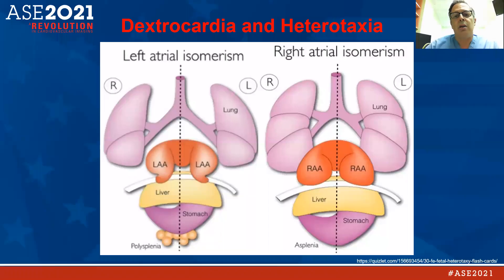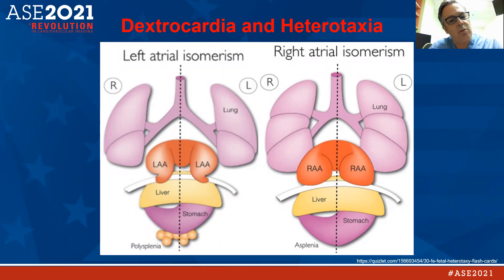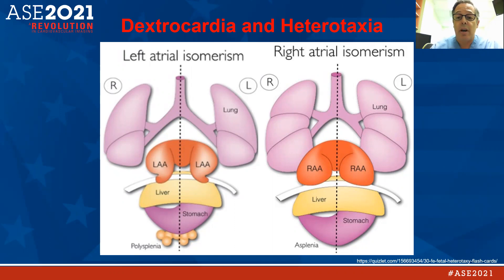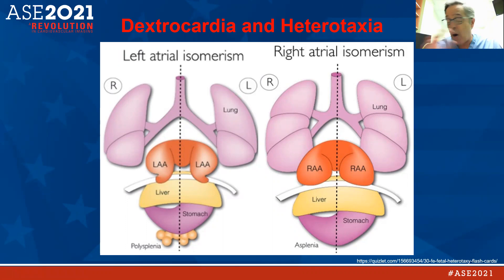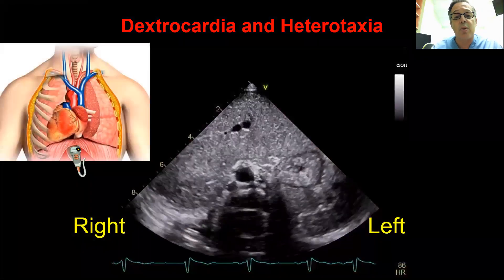Now we discuss heterotaxy, specifically patients with heterotaxy and dextrocardia — though not every heterotaxy case has dextrocardia. Left atrial isomerism is shown on the left and right atrial isomerism on the right — really representing symmetrical arrangement or bilateral same-sidedness, with everything mirrored from the atria and viscera. Left isomerism is bilateral left-sidedness with two left atria or a common left atrium; right isomerism has right-sided structures prevailing. This is very complex and commonly seen in patients with dextrocardia, so it's important to understand.